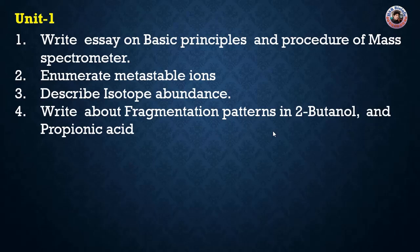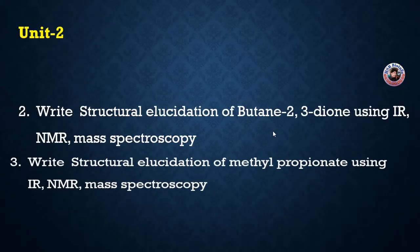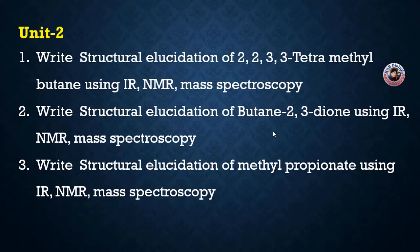The first thing we will observe is the fragmentation pattern in tert-butanol and propionic acid. Unit 2: the first question is write the structural elucidation of butan-2,3-dione using IR (infrared), NMR (nuclear magnetic resonance), and mass spectroscopy. The next question is write the structural elucidation of methyl propionate using the same methods. Also, write the structural elucidation of 2,2,3,3-tetramethylbutane using IR, NMR, and mass spectroscopy.